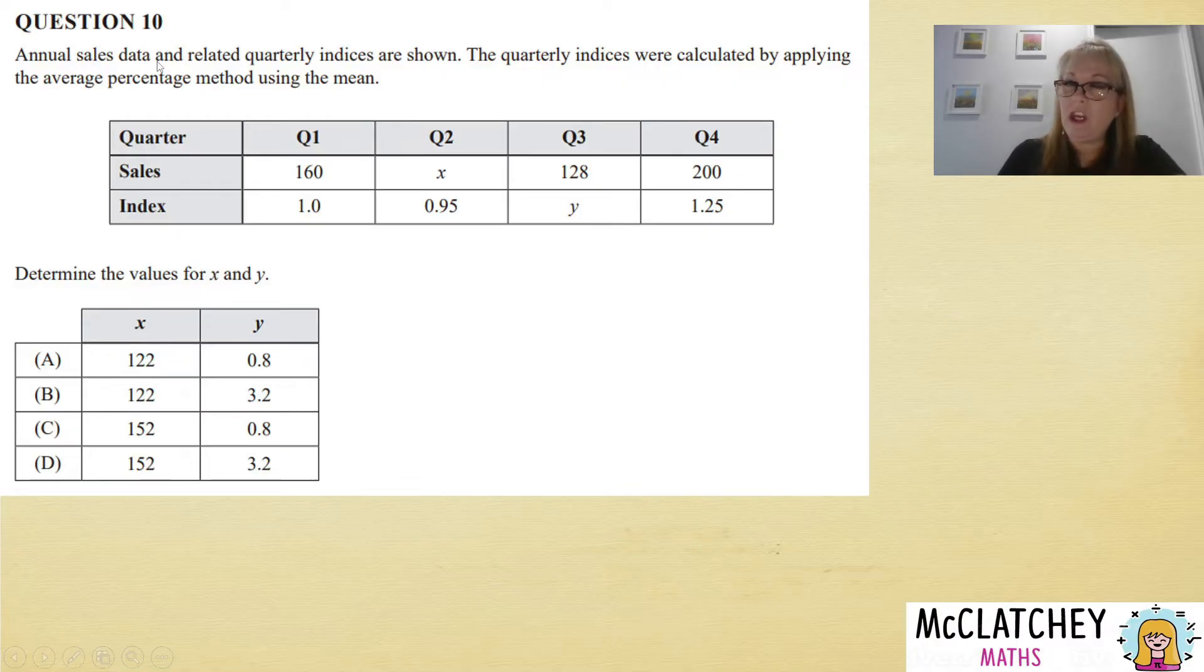When we've got an index of 1, what that tells us is that the original mean for all these four numbers added together was 160. Because 160 divided by 160 gives us 1, this index of 1 tells us that quarter 1 sales were the average sales for the four quarters. Knowing that gives us the ability to use the indices to work out the sales value, or to use the sales to work out the index. So it becomes our point of reference for all four quarters.